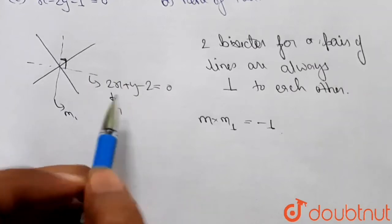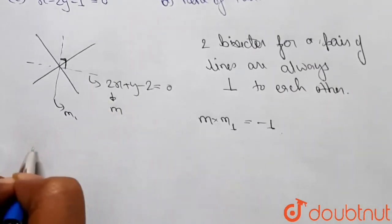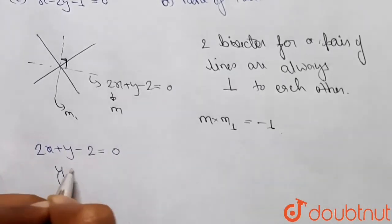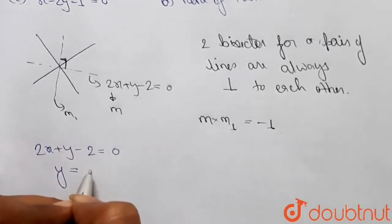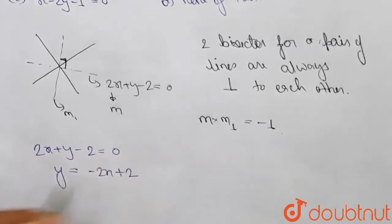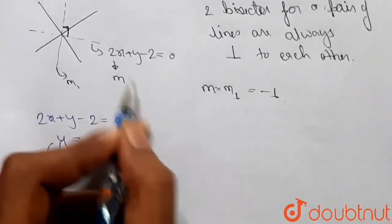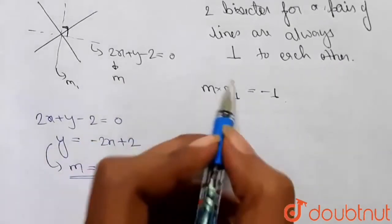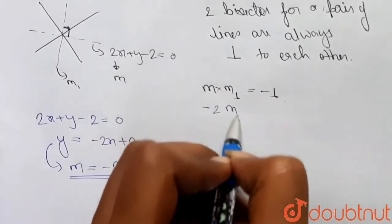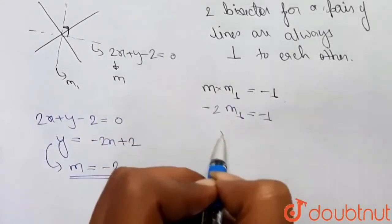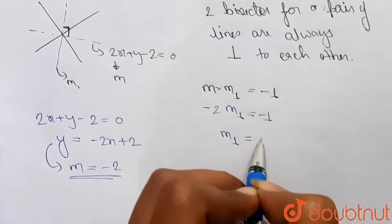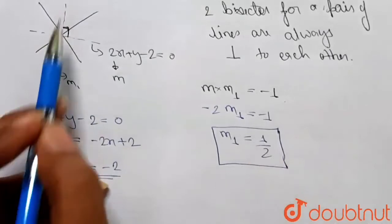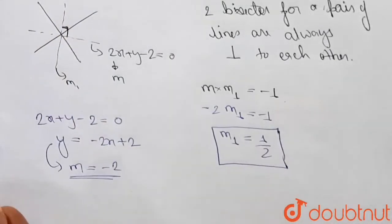Since we have the equation of the line 2x + y - 2 = 0, we can find its slope. Writing it as y = -2x + 2, the slope m equals -2. So, -2 × m1 = -1, which gives us m1 = 1/2. The slope of the angle bisector we need to find is 1/2.